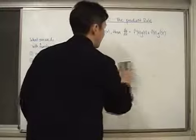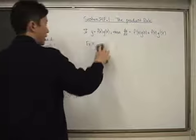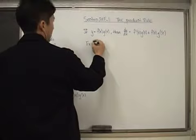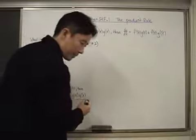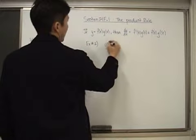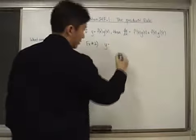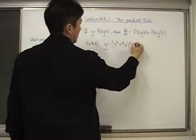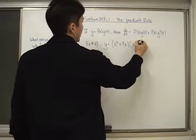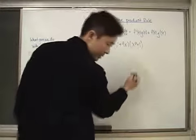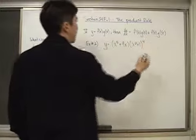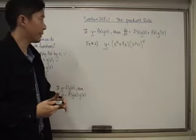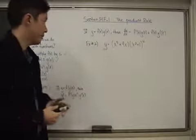Let's look at Example 2 — the examples get a little harder as we go. Example 2: y is equal to (x to the fifth plus nine x) times (x squared plus one) raised to the fourth power.